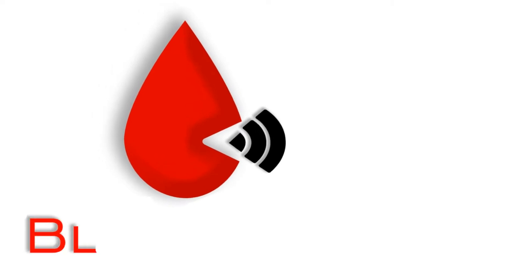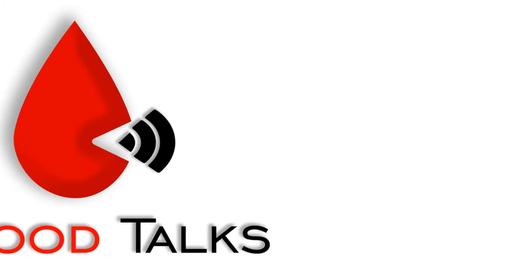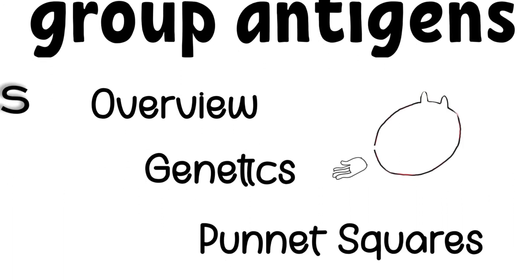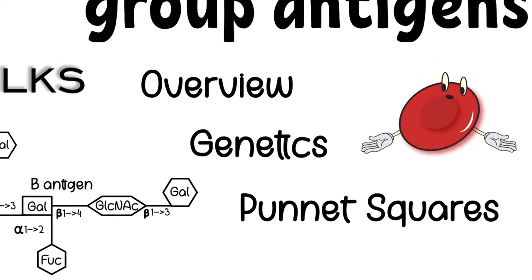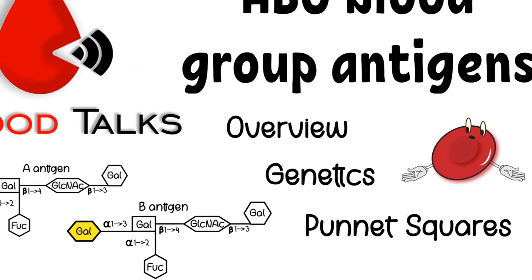Hello, welcome back Blood Talk fans. Today we are back for another episode in transfusion medicine or blood bank. We will start with foundations of blood bank: the ABO blood groups. In this video, I will give you an ABO blood group overview including genetics and Punnett square. I will include timestamps in the description box below so you can refer to that if there's any topic you are particularly interested in.